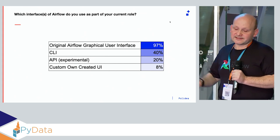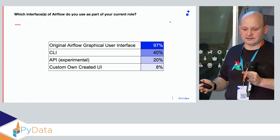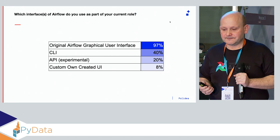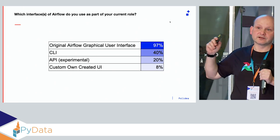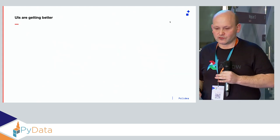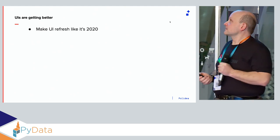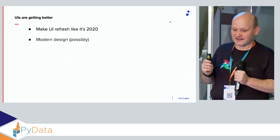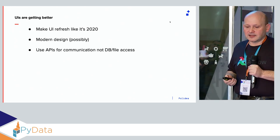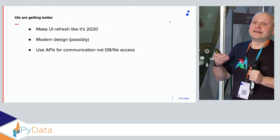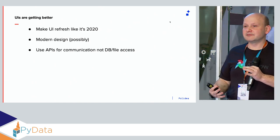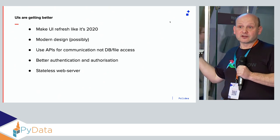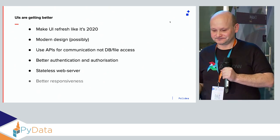For the UI: 97% of people actually use it, which is great. We know which views are most useful. Plans include: auto-refresh — it's 2020, the UI should refresh itself; modern design, possibly Material Design; use APIs for communication instead of direct DB/SQLAlchemy calls; better authentication and authorization; an almost-stateless web server — which is already mostly done; and better responsiveness.